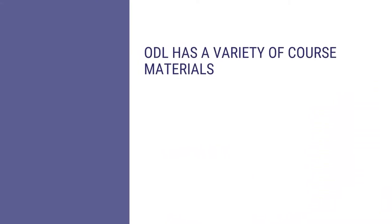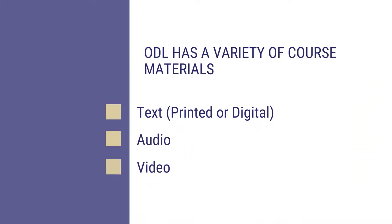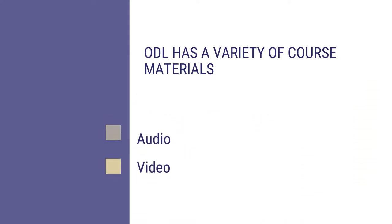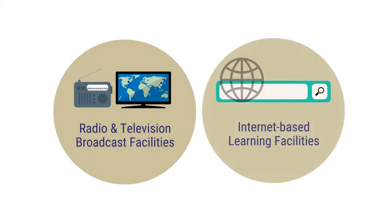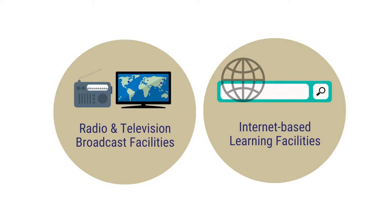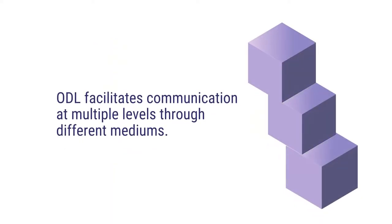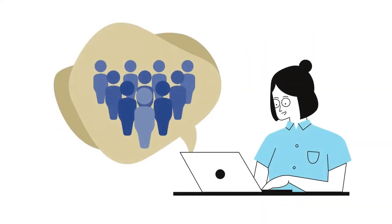ODL has a variety of course material to help its learners. It is not limited to printed text. It uses digital text, audio and video mediums. It also utilizes radio and television broadcasts, teleconferencing facilities, and other internet-based learning facilities. The quality of the courseware is tested and validated before it is made available to the learners. ODL facilitates communication at multiple levels through different mediums. This helps interactions between teachers and students and also among the students themselves.